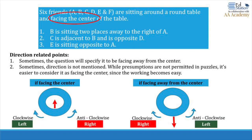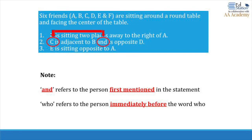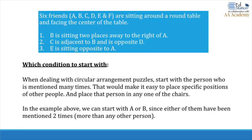First, look at the direction given in the question — sometimes people are facing the center of the table, sometimes away from it. If the question says facing the center, as in this example, for a person's left you move in the clockwise direction, and for a person's right you move in the anti-clockwise direction. It's like you are facing the center: left is your left, going clockwise; right is anti-clockwise. For facing away, the directions reverse — right means clockwise.